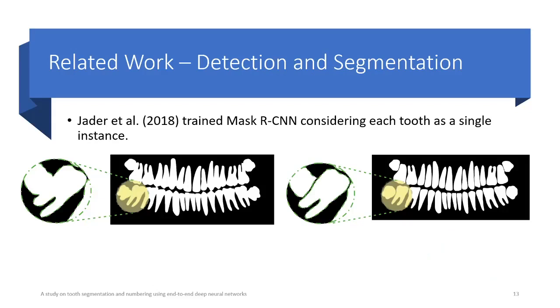In a previous study from our lab, Jader et al. trained Mask R-CNN to detect and segment teeth considering each tooth as a single instance. To do this, the authors modified binary mask annotations, as shown in the figures. The left figure displays our original annotation, and the right one shows the modified version. We also adopted this procedure, as I'll explain later. This resulted in a considerably better performance.